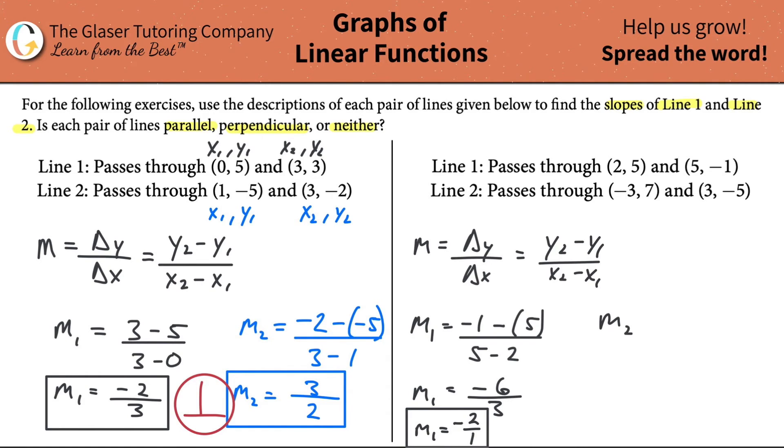Now let's calculate the second slope. The y2 value there is going to be negative 5. The y1 value is going to be 7, so minus 7. The x2 value is 3, minus then our x1 value, which is negative 3. Be careful there with the signs. So, m2 is going to equal negative 5 minus 7, so that's negative 12. This is a double negative, so it becomes positive, 3 plus 3, which is 6. Now m2 is going to equal negative 2, and I'll just write it as negative 2 over 1.